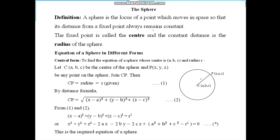Now start with sphere. As you know very well, a sphere is the locus of a point which moves in space so that its distance from a fixed point always remains constant. The fixed point is center and the fixed distance is radius.